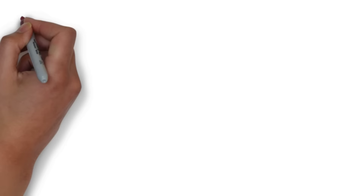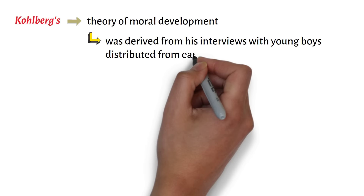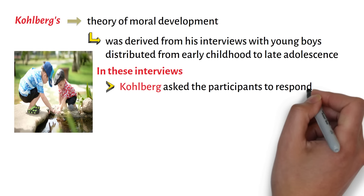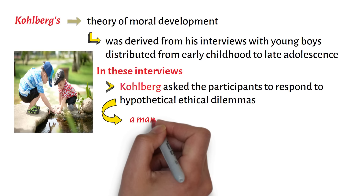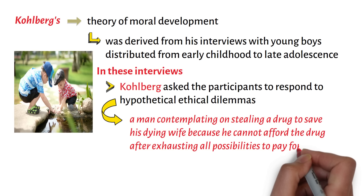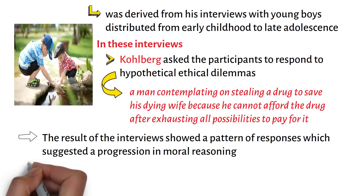Kohlberg's theory of moral development was derived from his interviews with young boys distributed from early childhood to late adolescence. In these interviews, Kohlberg asked the participants to respond to hypothetical ethical dilemmas, such as a man contemplating stealing a drug to save his dying wife because he cannot afford it after exhausting all possibilities to pay for it. The result of the interviews showed a pattern of responses which suggested a progression in moral reasoning, and thus was born the theory of moral development, which for Kohlberg is the basis for ethical behavior.